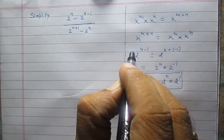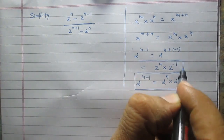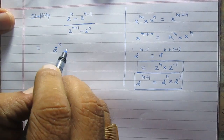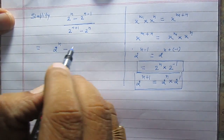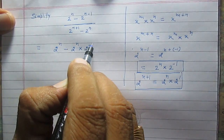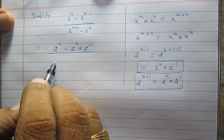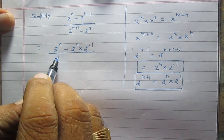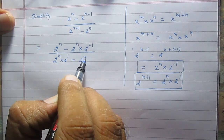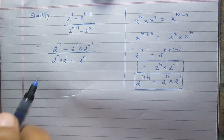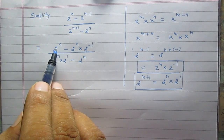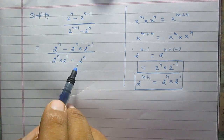So using these two substitutions, we can rewrite the given quantity as 2 raised to the power n, and 2 raised to the power n multiplied by 2 raised to the power minus 1, over 2 raised to the power n plus 2 raised to the power n. We see that 2 raised to the power n is common in both terms in the numerator as well as in the denominator.